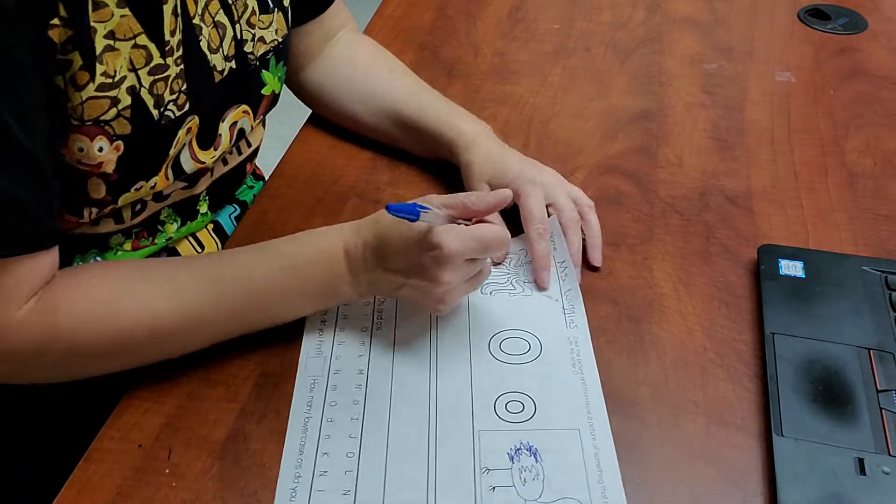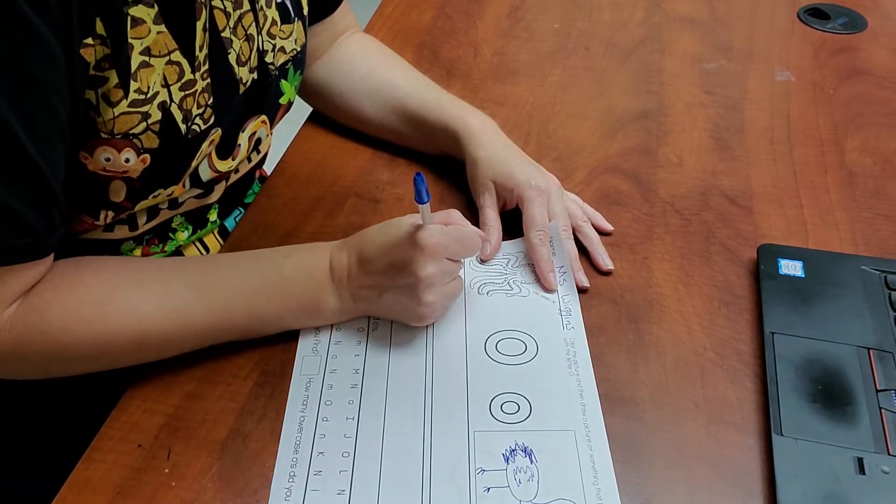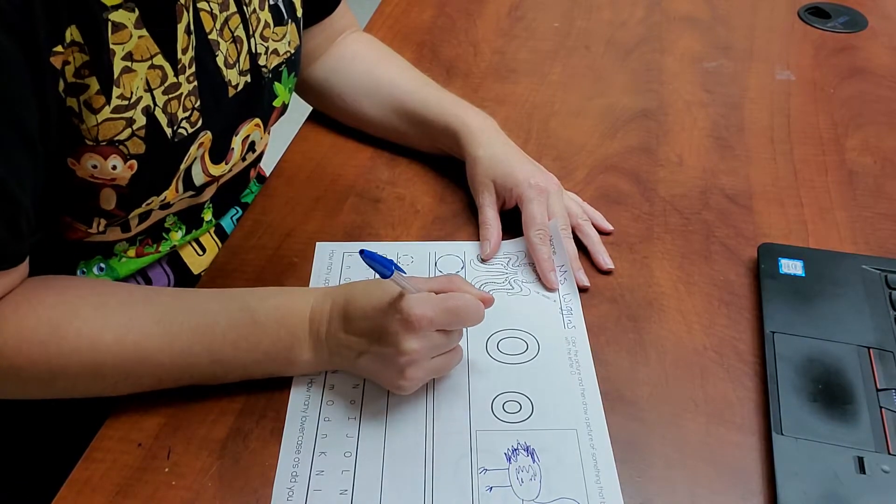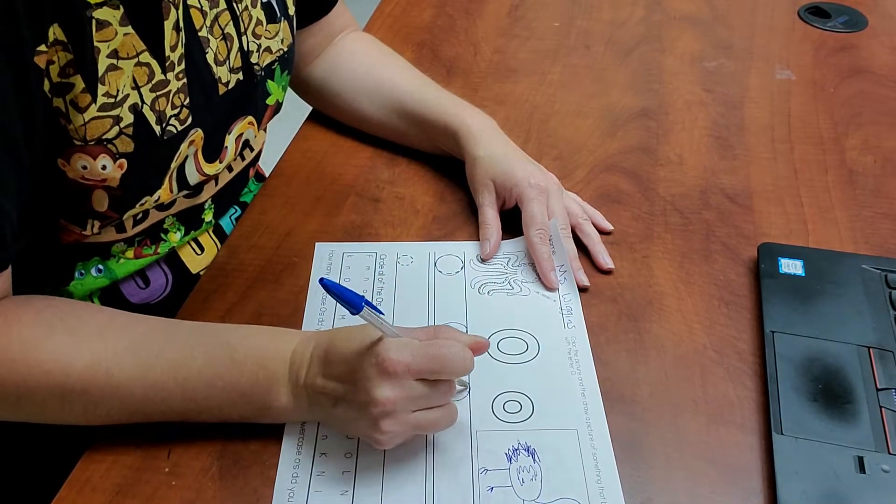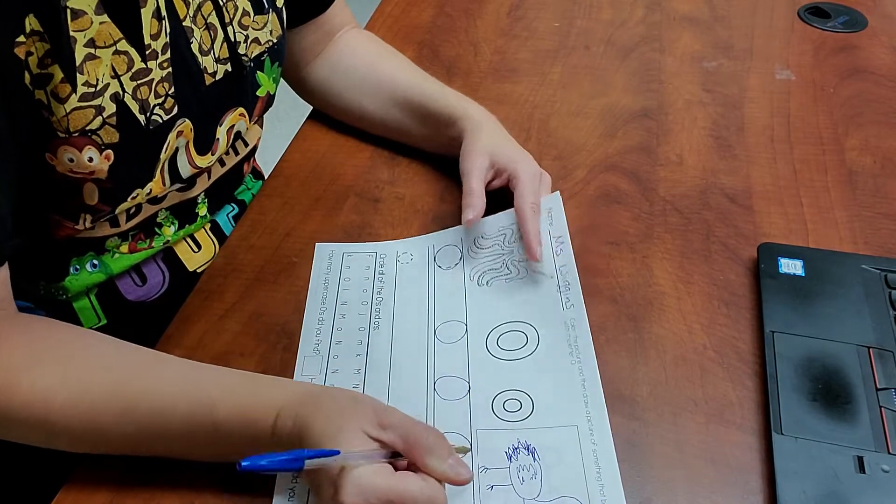All right, go ahead and trace your O and then write three of them yourself. One, two, three.